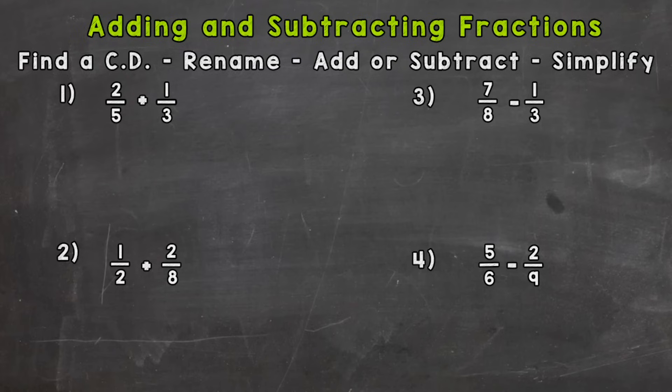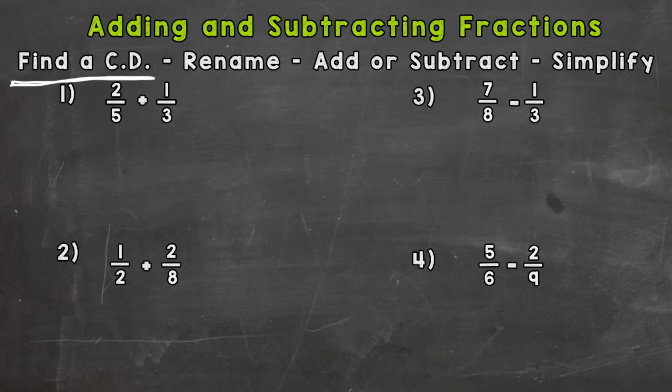For number one we have two fifths plus one third. The first thing you want to check when you have an adding or subtracting fractions problem is to see if your denominators, or bottom numbers, are the same. Here we have a five and a three, so we are not ready to add those fractions yet. Our first step is to find a common denominator.